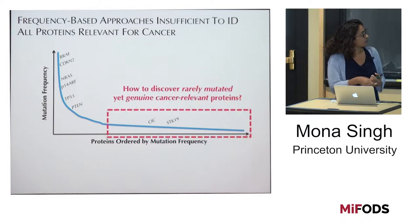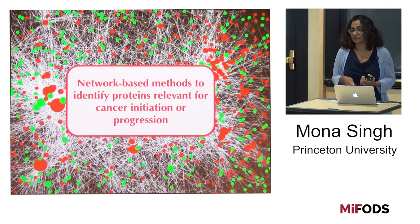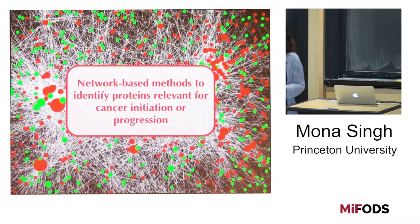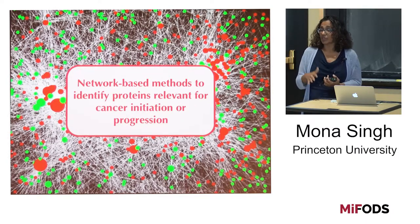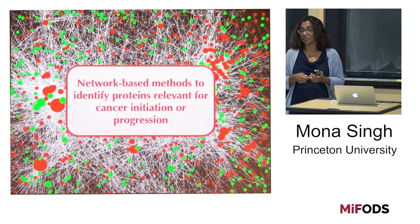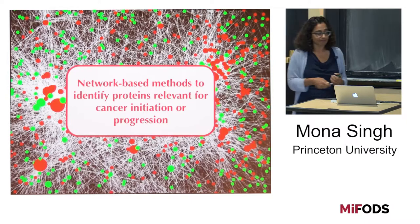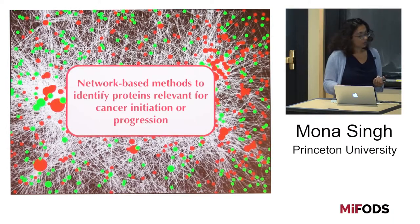What we want to do is try to discover from this long tail genuine cancer-relevant proteins. Some of the things you think about with significance analysis involve background models that can maybe get rid of some irrelevant ones — for example, a protein can accumulate mutations just because it's a very long protein. So what I'm going to be talking about are network-based methods to identify proteins that are relevant for cancer initiation or cancer progression.